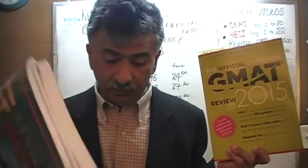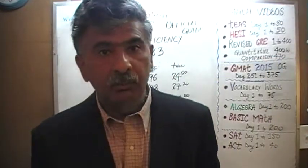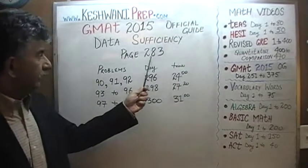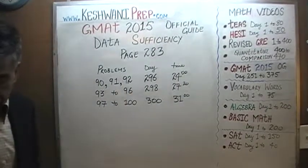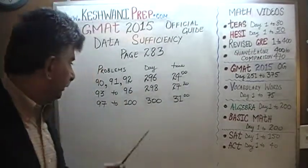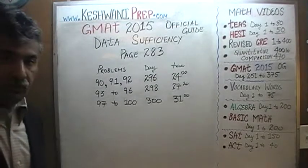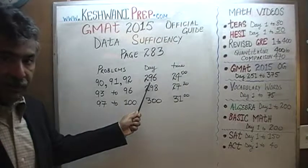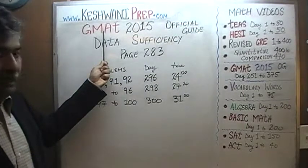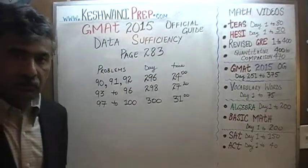Since we have already solved every single math problem from the 13th edition, I'm not going to redo the problems — I'm simply going to tell you where you'll find solutions. Today we'll look at all the data sufficiency problems appearing on page 283. You'll find solutions to problems 90, 91, and 92 on day number 296 — just type in 'GMAT math day 296' and the video will pop right up.